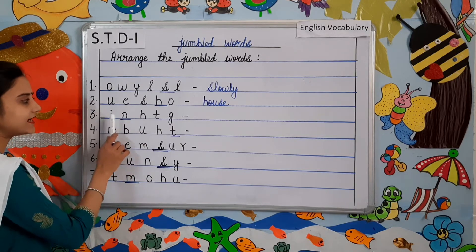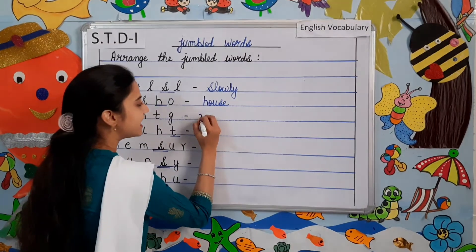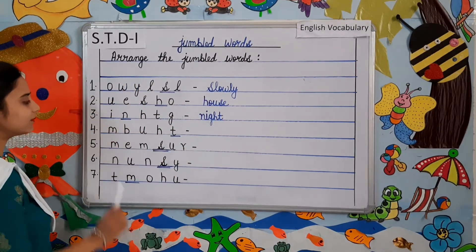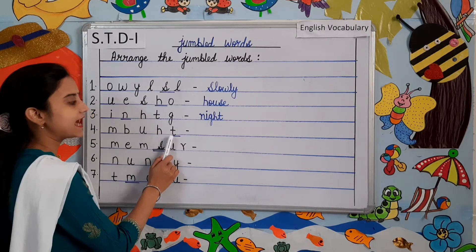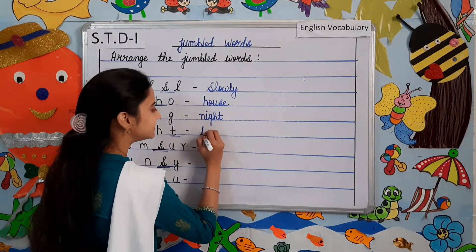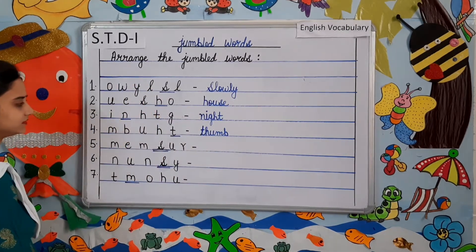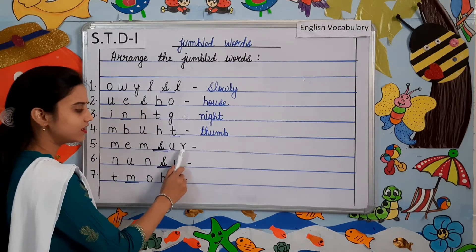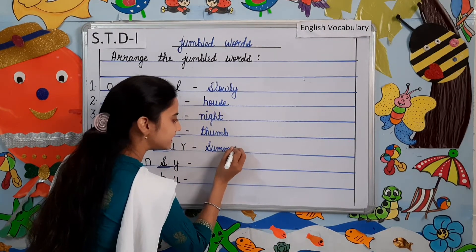Number three: I-N-H-T-G. The correct word will be N-I-G-H-T. Night. Number four: M-B-U-H-T. I have underlined the letter T, so the correct word will be T-H-U-M-B. Thumb. Number five: M-E-M-S-U-R. The correct word will be S-U-M-M-E-R. Summer.